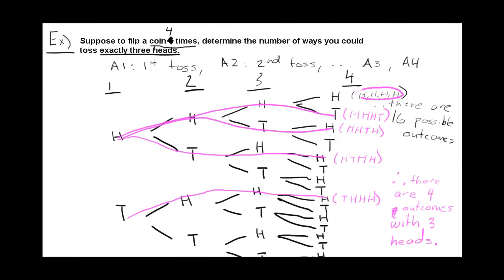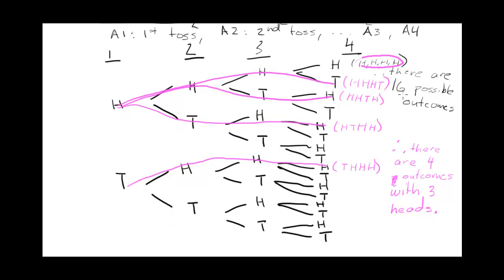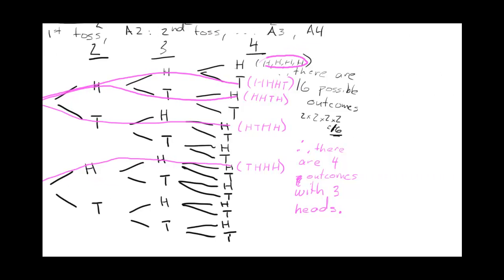We could have done that for our second example too — tossing the coin four times. For each coin toss, how many possibilities did you have? There were two, two, two, and two — two outcomes for each action, heads or tails. So how many total possible outcomes? Sixteen. That's just two times two times two times two, and that right there is our Fundamental Counting Principle.